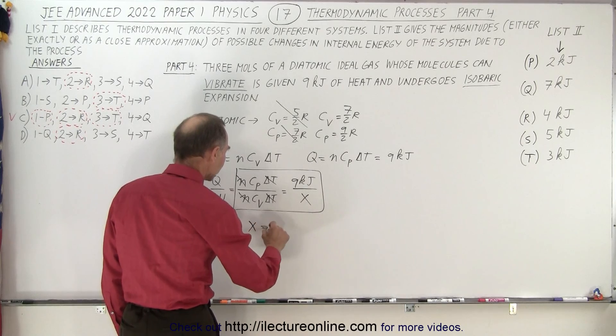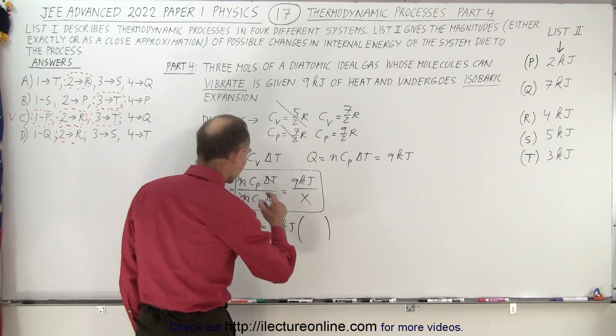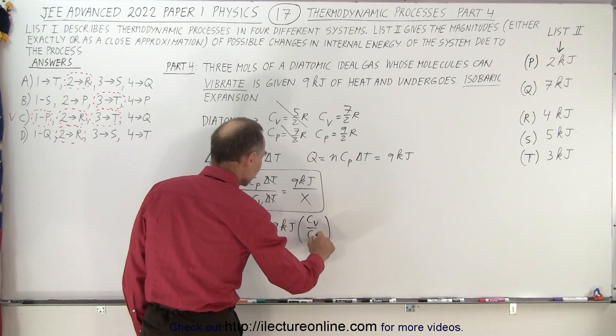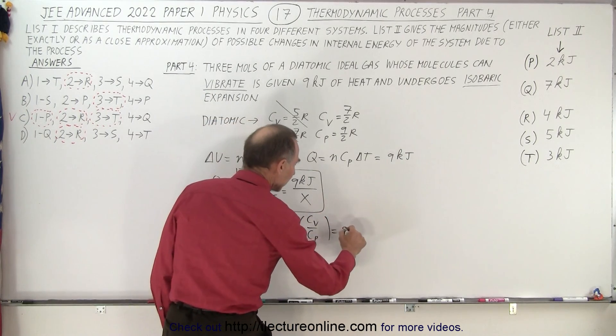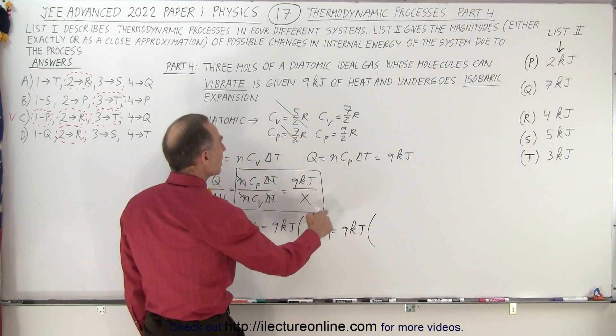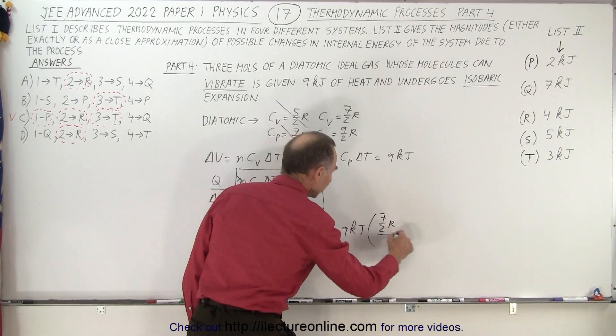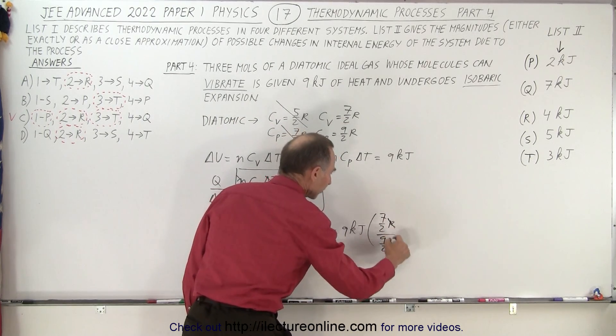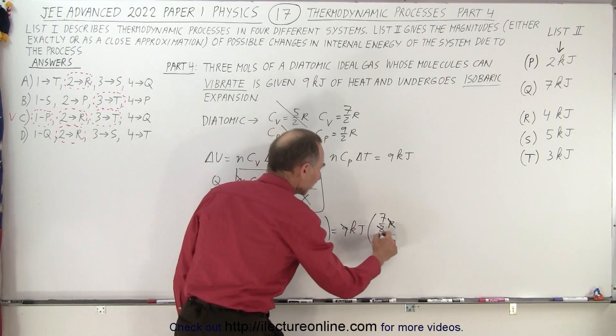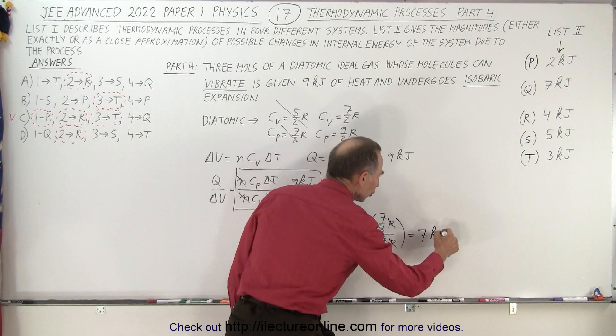So in other words X is equal to nine kilojoules times the ratio of C sub V over C sub P which is equal to nine kilojoules times C sub V is seven over two R and C sub P is nine over two R. And of course R's cancel out, over two cancels out, the ninth cancels out, and so we end up with seven kilojoules.